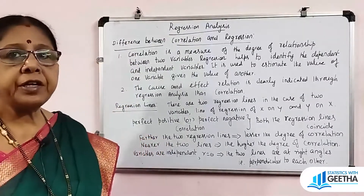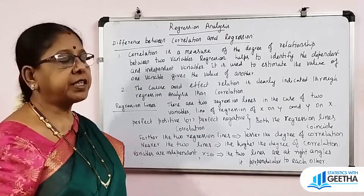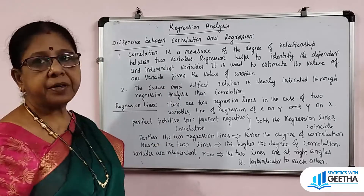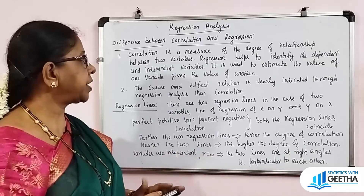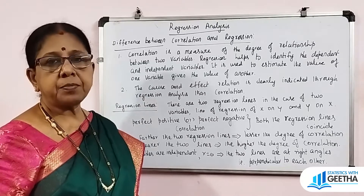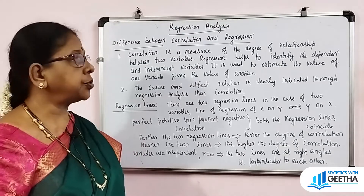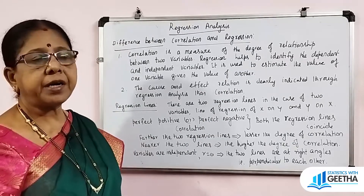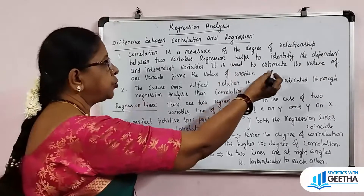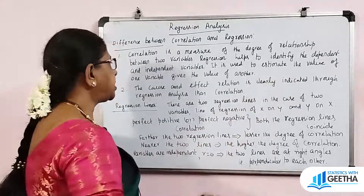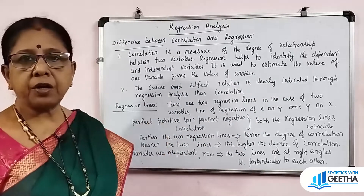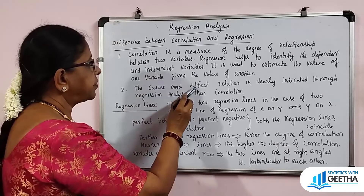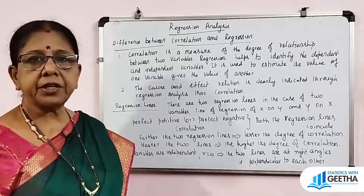Now, the difference between correlation and regression. Correlation is a measure of the degree of relationship between two variables — we can measure the relationship between two variables. Regression helps to identify the dependent variable and independent variable, and is used to estimate the value of one variable given the value of another. The cause and effect relationship between the two variables is clearly indicated through regression.